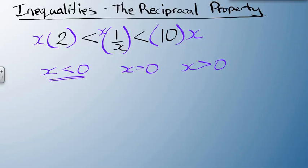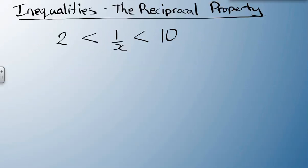So instead, we're going to use the reciprocal property. Now using the reciprocal property, all I have to do is take the reciprocal of all these parts, so 2 becomes 1 over 2, 1 over x becomes x, 10 becomes 1 over 10. Now with the inequality symbols, I'm actually going to flip those so they're pointing the other way. And that is the reciprocal property.